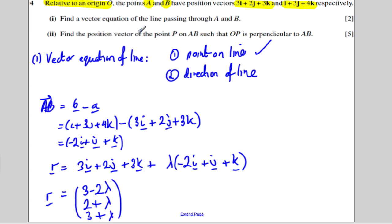Find the position vector of the point P on AB such that OP is perpendicular to AB. Right, straight away, I'm going to say to myself, I'm drawing a picture here.